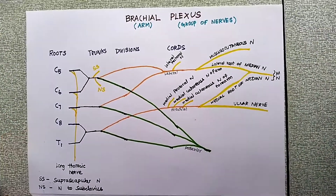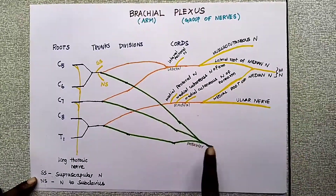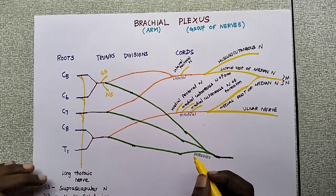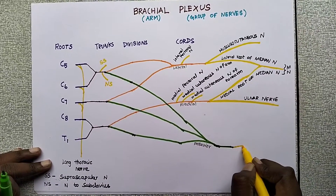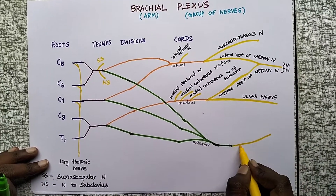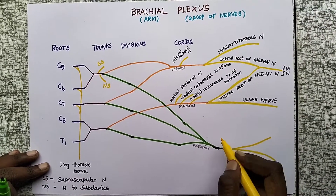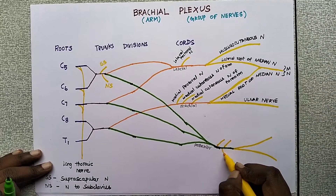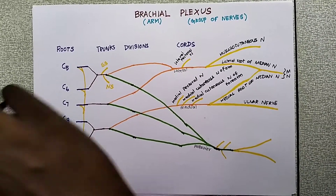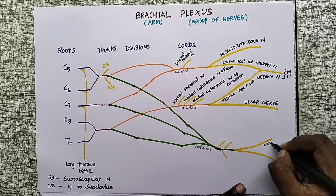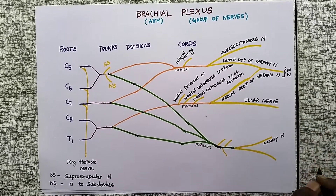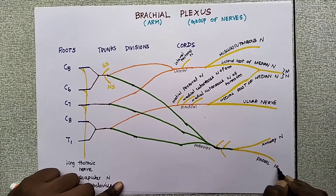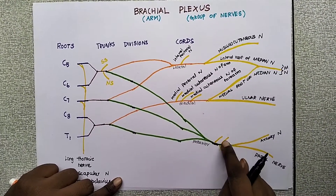The posterior cord is formed by all posterior divisions. It gives five nerves, the two most important being the axillary nerve and the radial nerve, plus three additional nerves.